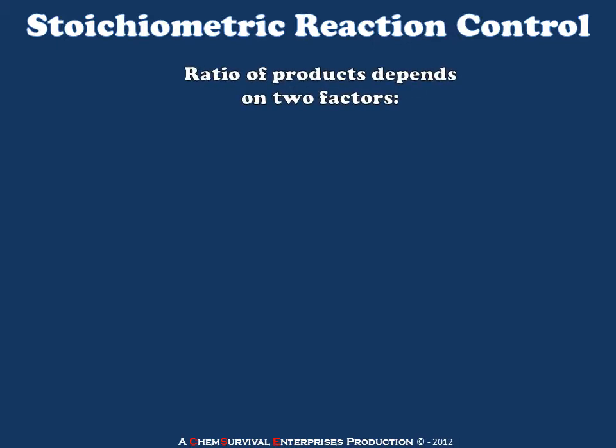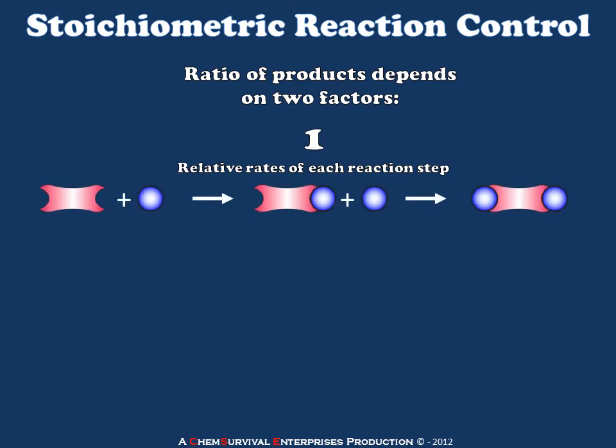The ratio of products which forms in a process like this depends on two basic and important factors. The first is the relative rate of each reaction step within the process. If the first step is extremely rapid but the second is extremely slow, this facilitates capturing of the intermediate. If, however, the second step is relatively rapid, it is extremely difficult to capture that intermediate product.